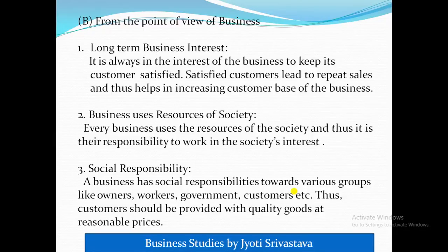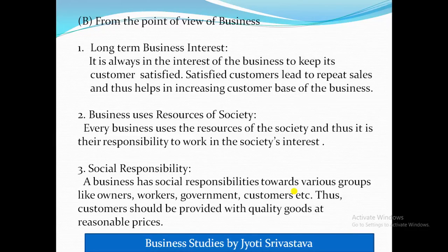The third point is social responsibility. A business has social responsibilities towards various groups like owners, workers, government, and customers. Customers should be provided with quality goods at reasonable prices. Businesses should provide better wages and good working conditions to workers, pay taxes on time to the government, and ensure that products are not hazardous to customers.